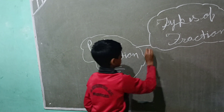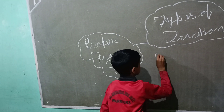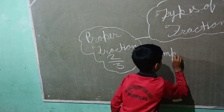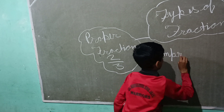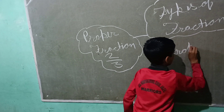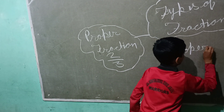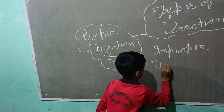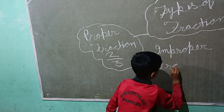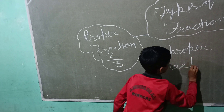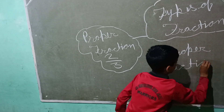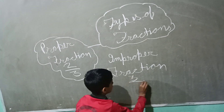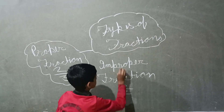Next is improper fractions. For example, 3 upon 2.